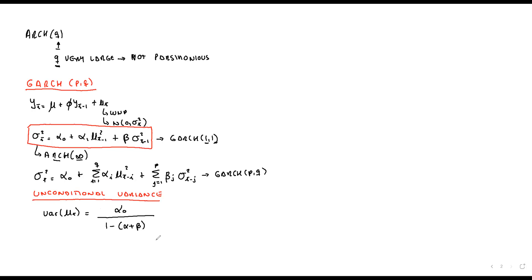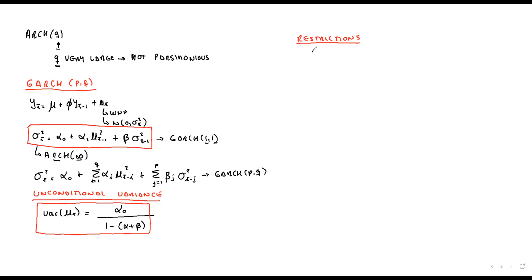There are important parameter restrictions. Since the variance must be a positive number, the restrictions are: alpha-0 > 0, alpha > 0, beta > 0, and alpha plus beta must be strictly less than one. If alpha plus beta is strictly less than one and alpha-0 is positive, the conditional variance is guaranteed to be positive. The condition alpha plus beta < 1 is known as the stationarity condition of the conditional variance.